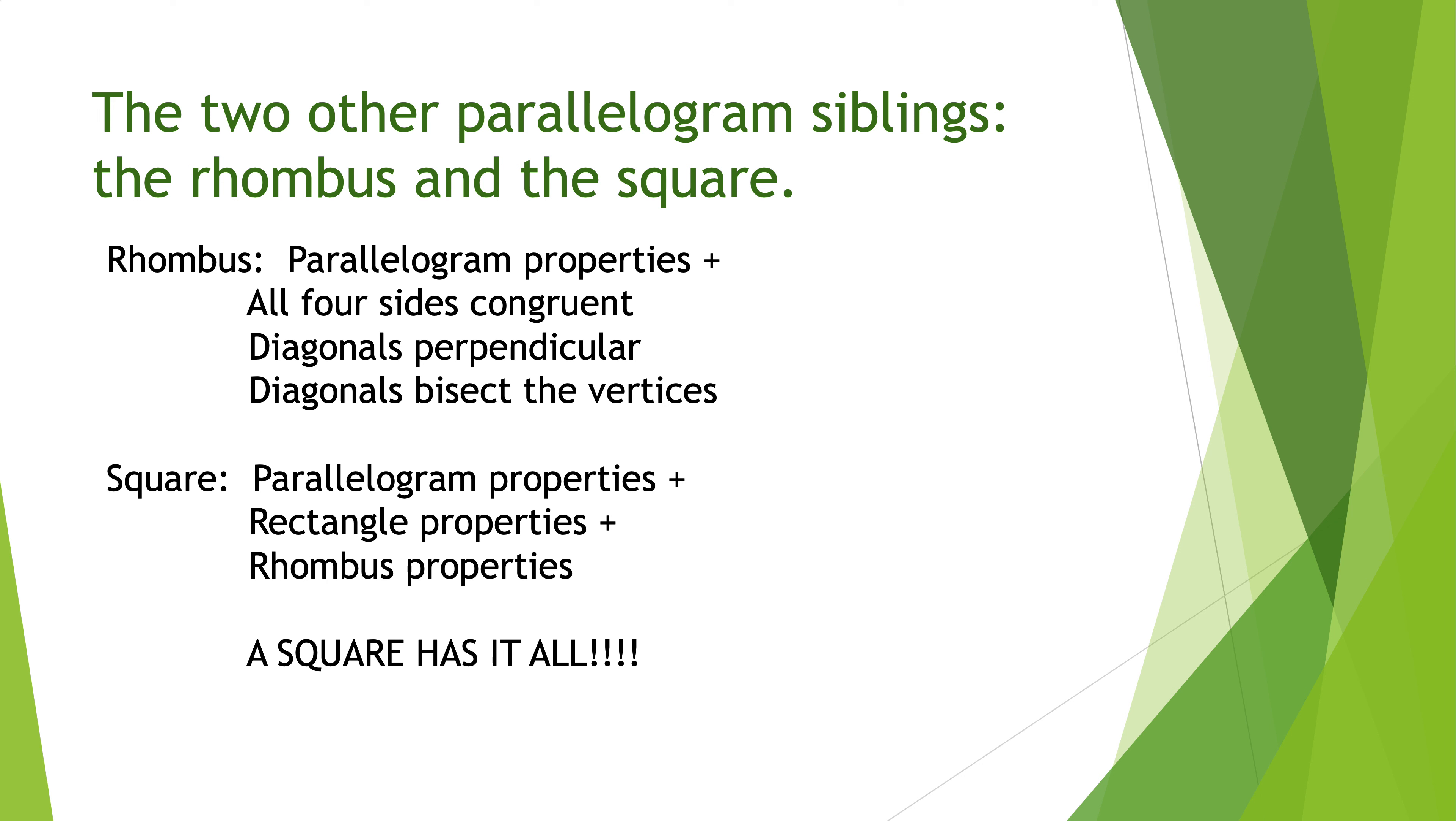For a rhombus, it's a parallelogram properties. They get them all. Everything that a parallelogram has: the opposite sides congruent, the opposite sides parallel, the opposite angles congruent, the consecutive angles adding up to 180, that's all true. The diagonals still bisect each other. None of that changes for a rhombus.